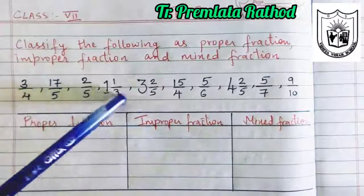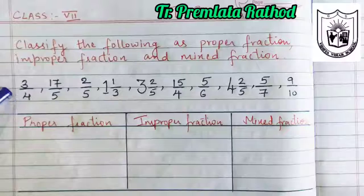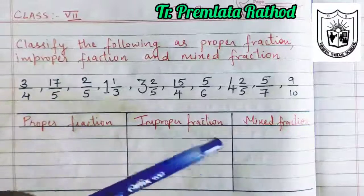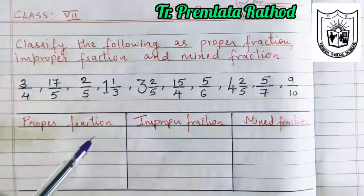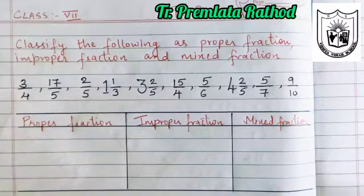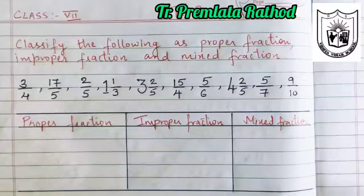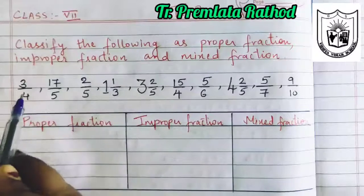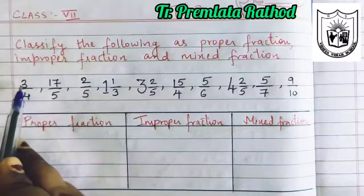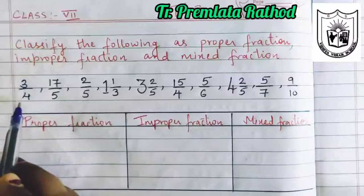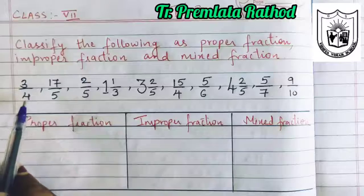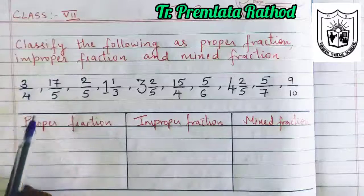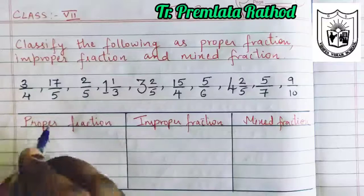So let us look at the examples which are given and place them in the right column. What are proper fractions? The fraction where we have the numerator smaller and denominator greater. Look at the first number that is given to us, that is 3 by 4. Here numerator is smaller compared to denominator, so this will come under proper fraction.